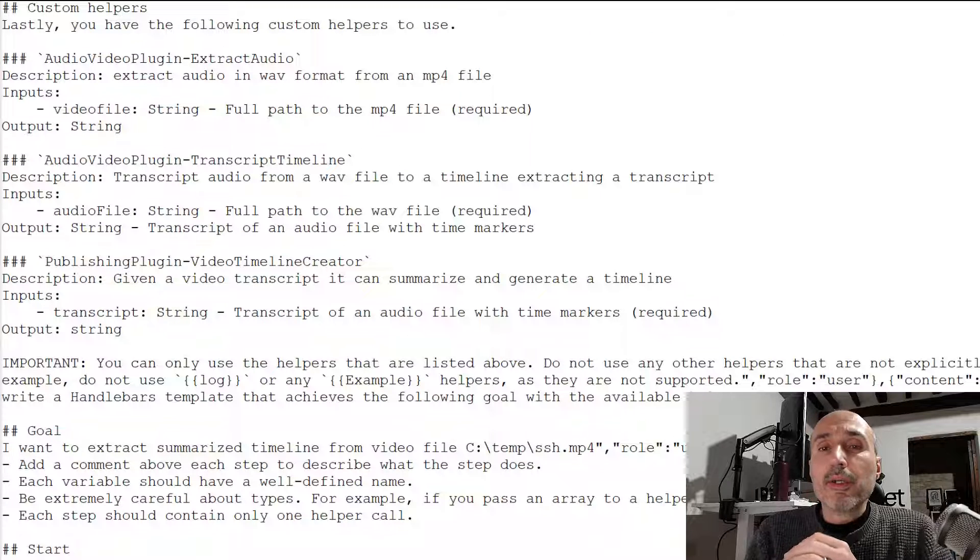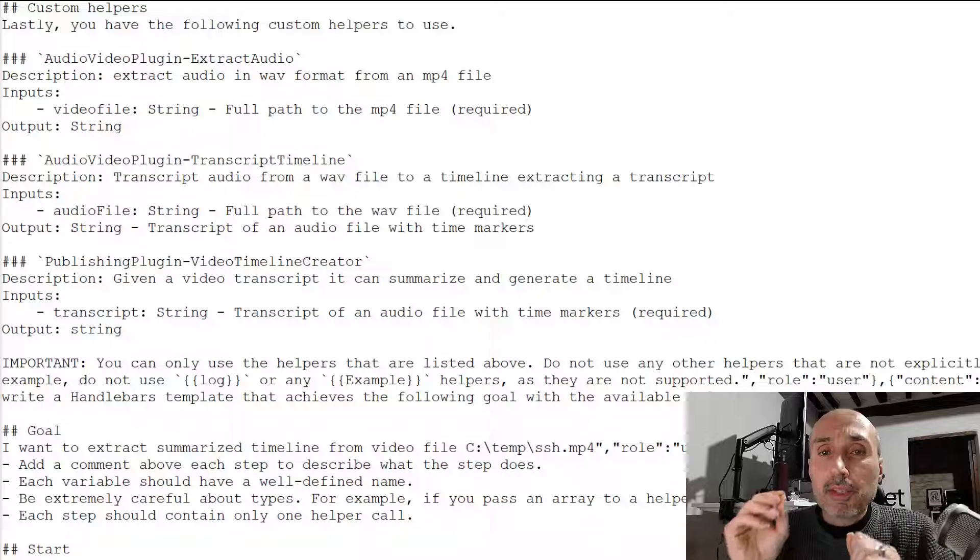And then at a certain point, the prompt starts including your plugins, the plugins you defined. So the large language model can understand which are the tools it can use to solve the plan. And actually at a certain point in the prompt, it will enforce the large language model not to use anything else, but only the plugins that the user defined. So you are sure that the plan contains only calls to your plugins.